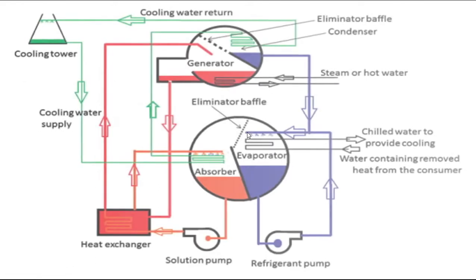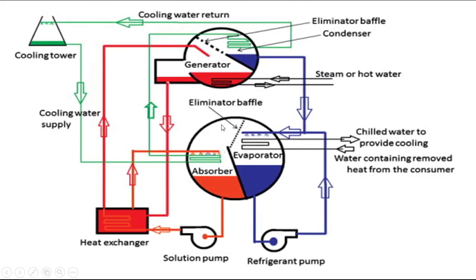The system has a lower pressure side and a higher pressure side. On the lower pressure side, we have the absorber and evaporator, both operating at the same pressure, placed in one shell and separated by an eliminator buffer. On the higher pressure side, generator and condenser are placed in another shell, also operating at the same pressure but higher than the absorber and evaporator.